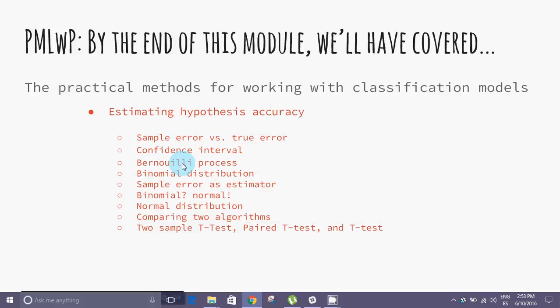In this module we have covered a wide range of techniques for estimating how accurate your hypothesis is when working with classification models. We have seen sample error versus true error, confidence interval, Bernoulli processes, binomial distribution, normal distribution, and how to compare the results of two algorithms.